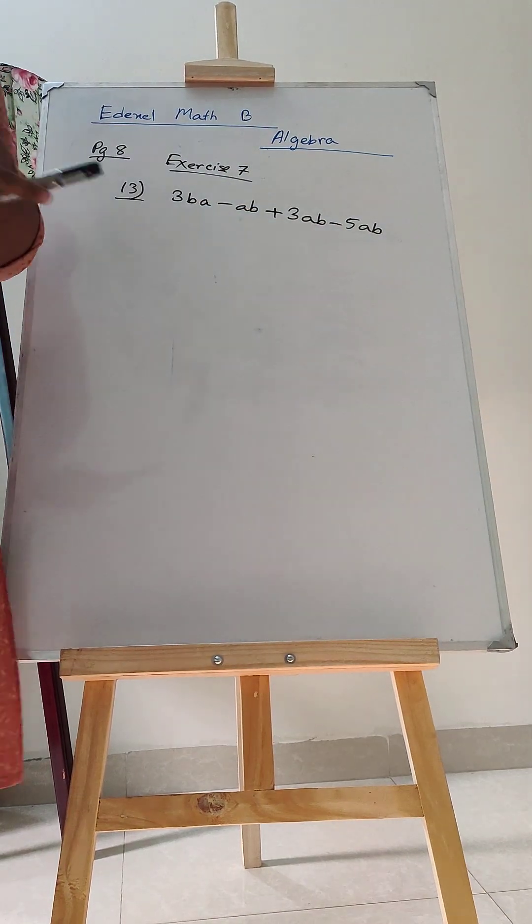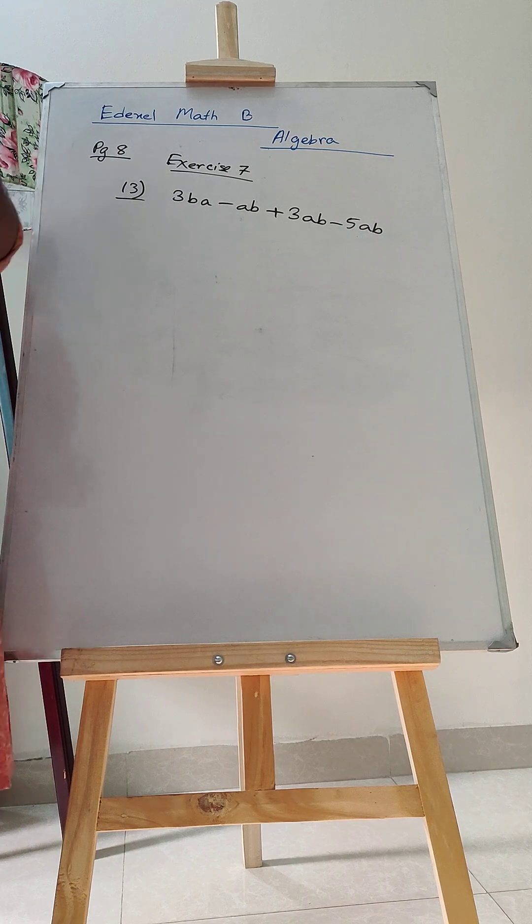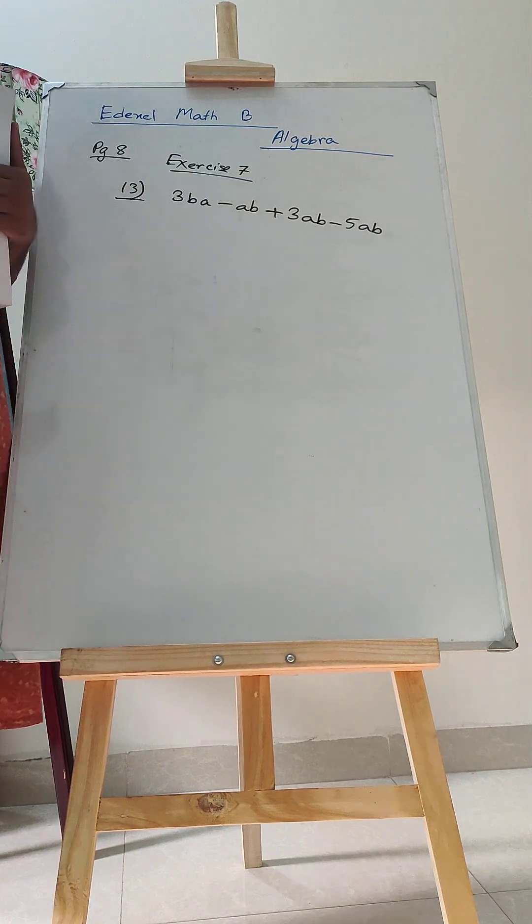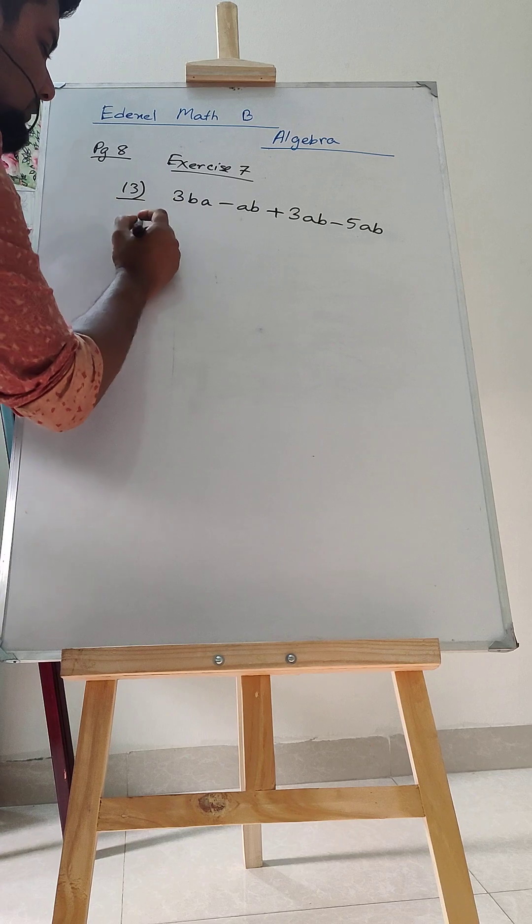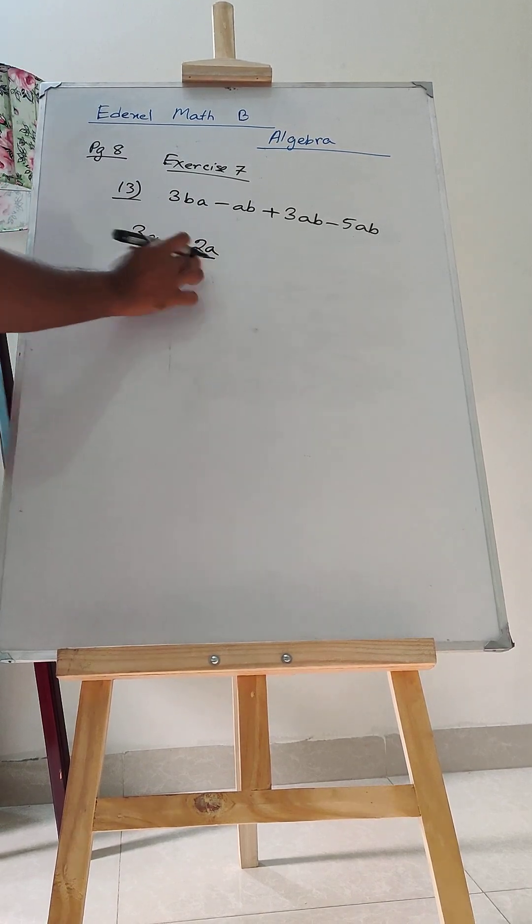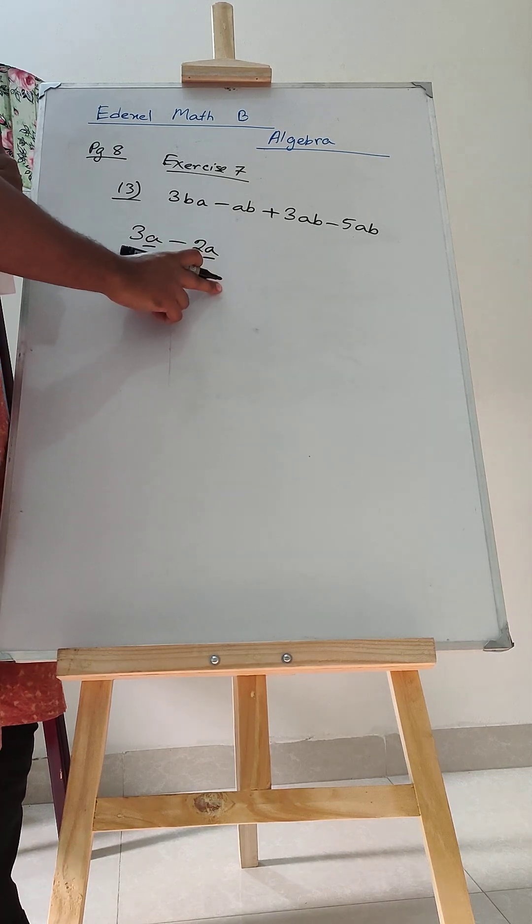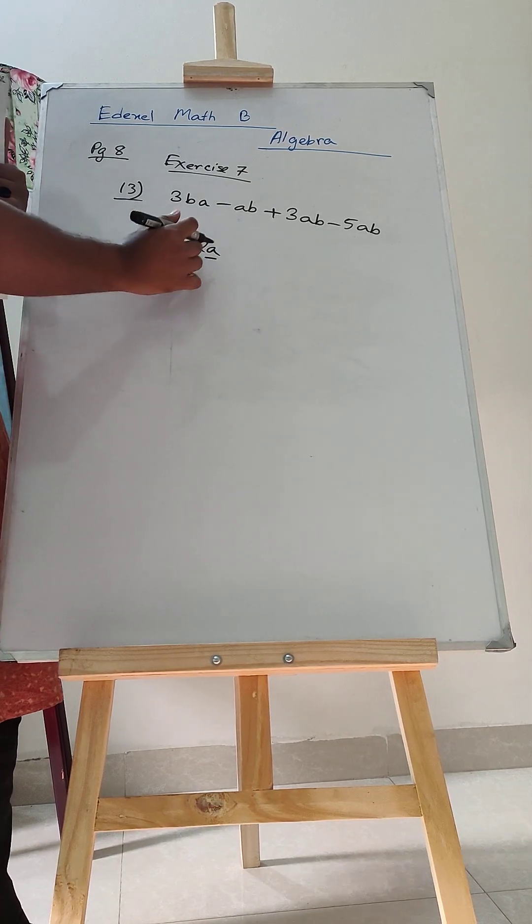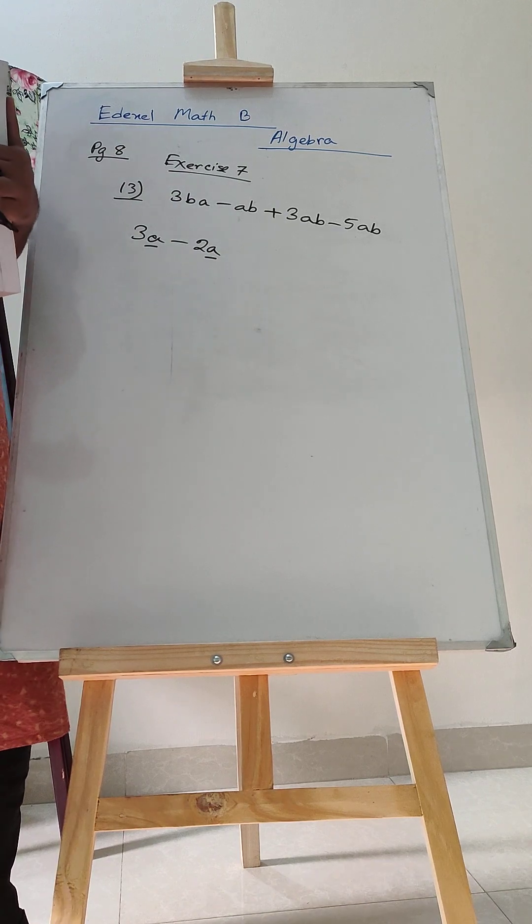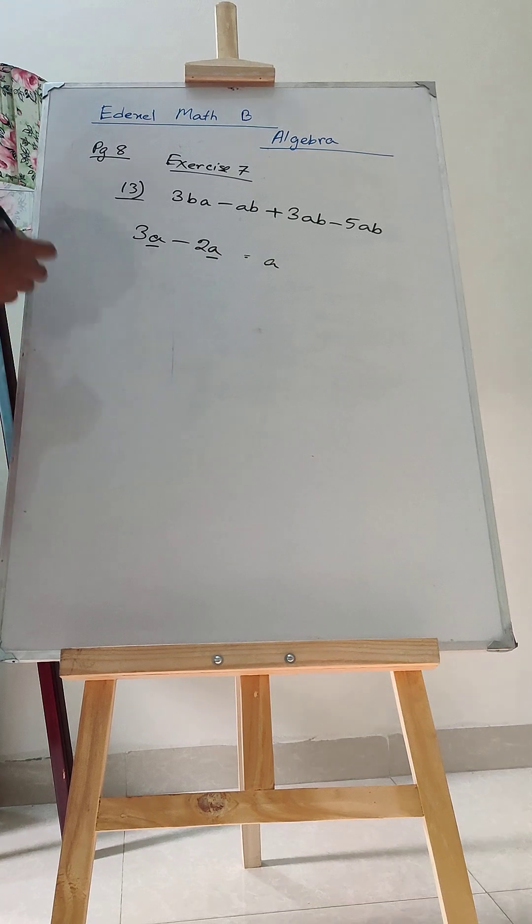Now, to do this type of maths, first of all we need to understand how similar or like terms work. Let's say if this is 3A minus 2A, then these both have got the same variable A. So here if the variables are same, we can subtract. This will be 3 minus 2, only A.